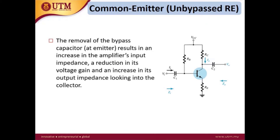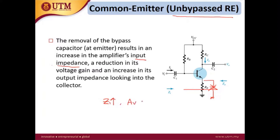Next we do the analysis on a circuit without a bypass capacitor at the emitter resistance RE. This is a common emitter unbypassed RE. If we remove the bypass capacitor, which was in parallel with RE, the amplifier input impedance will increase and the voltage gain will decrease.